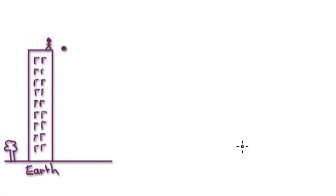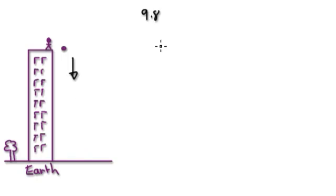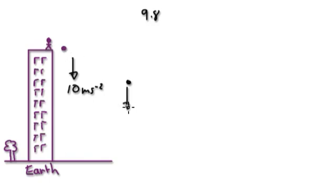Imagine you're standing on top of a building on Earth and you drop a cannonball off the top. Wherever the cannonball is, there's always going to be an acceleration of — well, on Earth it's 9.8, but let's round it off to 10. There's always an acceleration of 10 meters per second squared, no matter where the cannonball is.